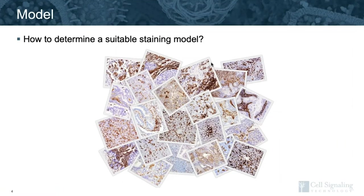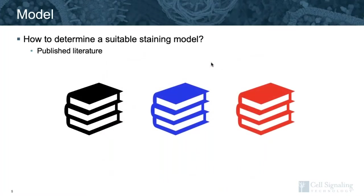When setting out to optimize a new antibody, an important consideration is the choice of model system on which to begin testing. The goal is to use a reliable model of known protein expression, or at the very least, a model that is highly likely to have detectable expression. It can be quite unfortunate to attempt staining using a new antibody on a model that happens to be negative for the protein. It can be useful to browse published literature to learn more about where your protein of interest is expected to be expressed and to get ideas on a reliable model to use. I do encourage you to use caution when interpreting published IHC data, as conclusions made based on staining assays alone are only as good as the antibody used.